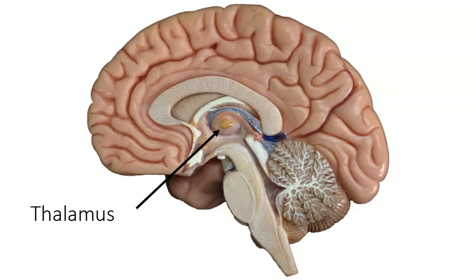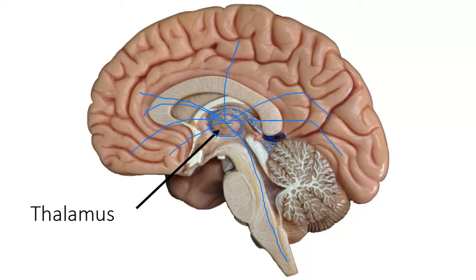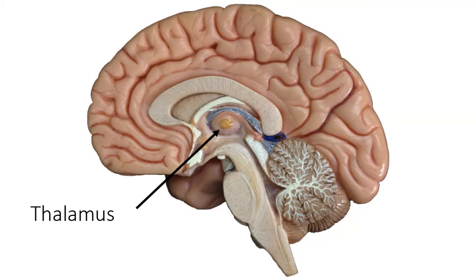The thalamus is this football-shaped structure here right in the middle. The only thing I'll say about the thalamus right now is that it is your brain's relay station. When all this information is going up from your body, if it makes it to the thalamus, it'll be sent to the appropriate lobe. If your pain signal doesn't make it past this point, you won't feel it — it has to make it to the thalamus for you to realize you're in pain. Just think of the thalamus as a relay station for now.